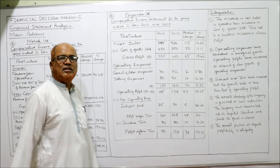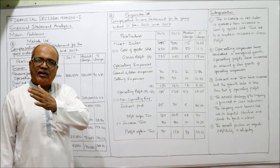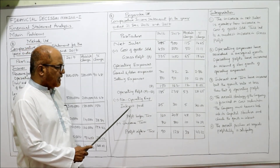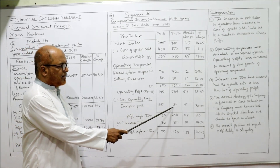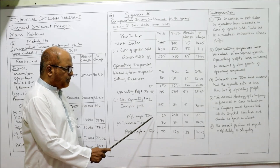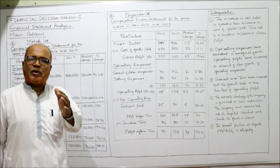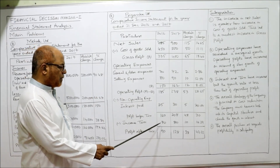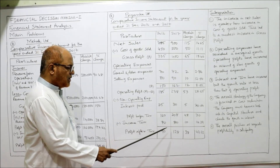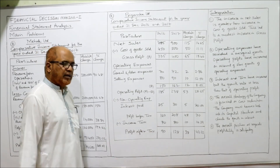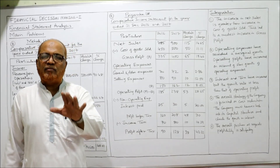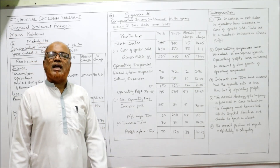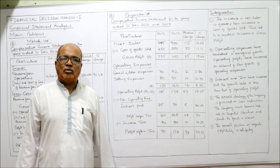From operating profit we deduct non-operating expenses. Interest paid: last year 25, current year 30. Deducting gives profit before tax: 160 last year, 208 current year. From this we deduct income tax as given in the problem: 70 last year, 80 current year. Deducting gives profit after tax: 90 last year, 120 current year.